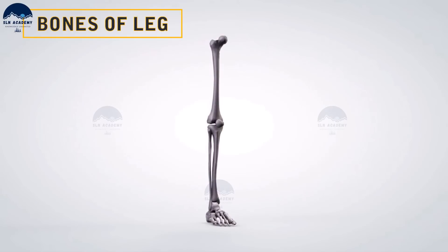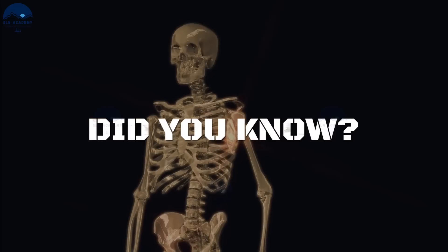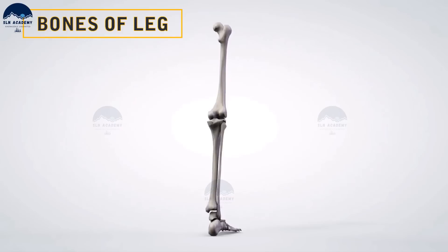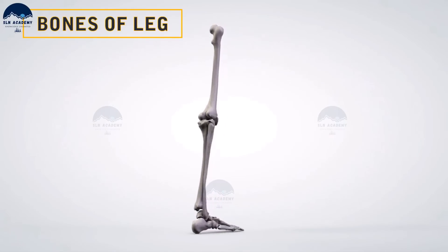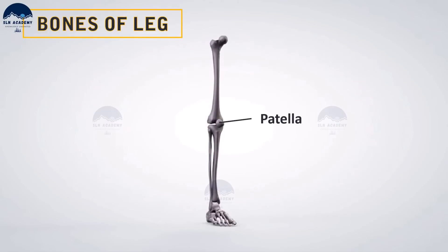The bones of the legs are the femur (thigh bone), tibia and fibula, seven tarsals (ankle bones), five metatarsals, and 14 phalanges. The femur is the longest and strongest bone of the human skeleton. A cup-shaped bone called the patella covers the knee at the front, also known as the kneecap.